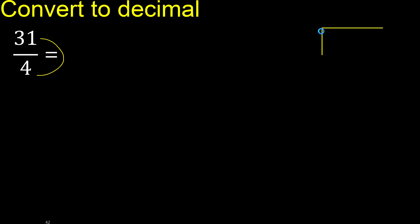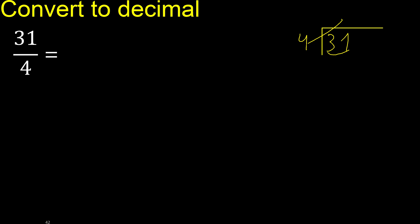31 divided by 4. 3 is not less, therefore next. 31 is not less, therefore: 4 multiplied by which number is nearest to 31 but not greater? 4 multiplied by 8 is 32, which is greater. 4 multiplied by 7 is 28, which is not greater. 31 minus 28 is 3. Next.